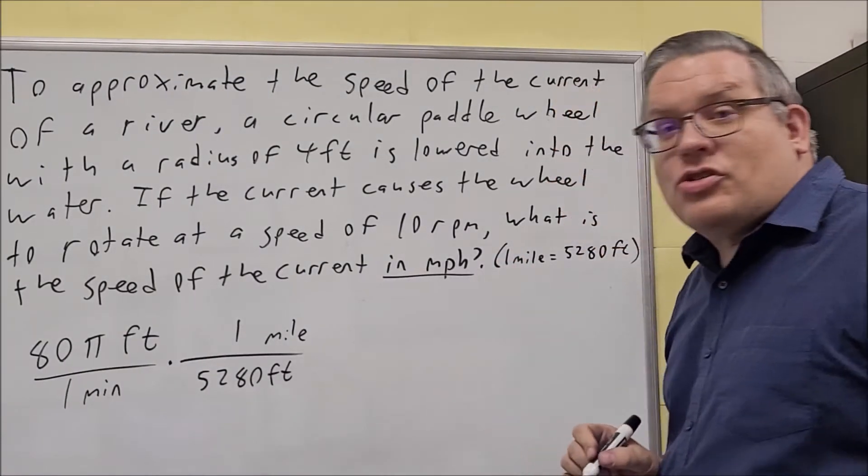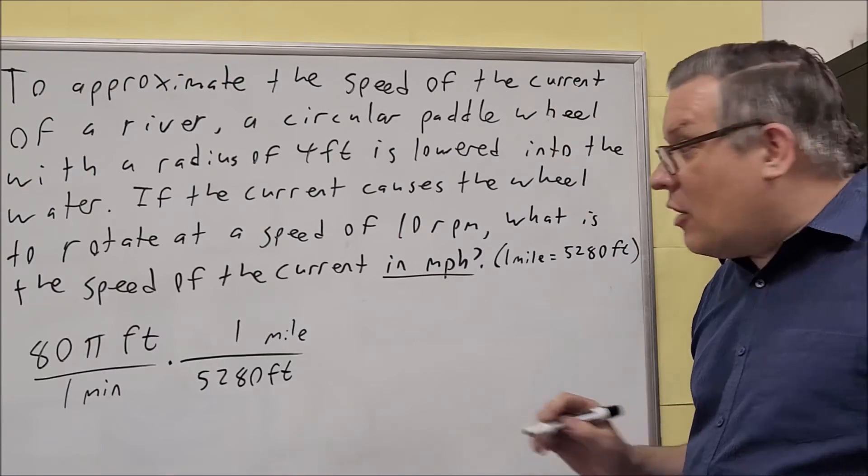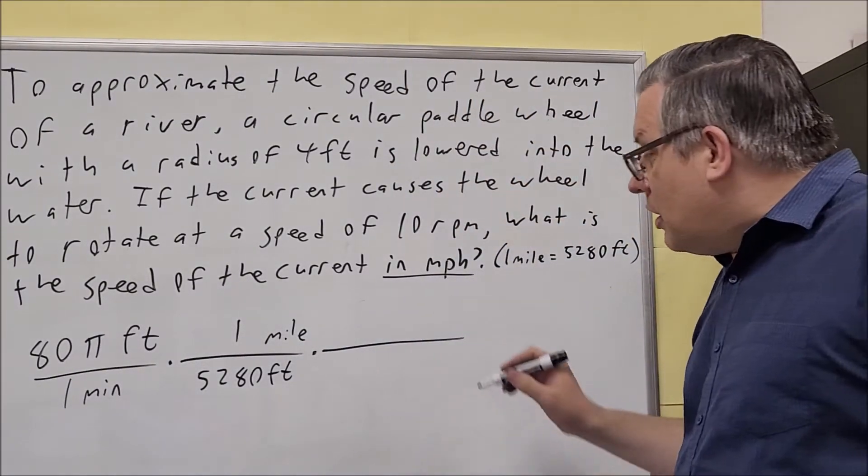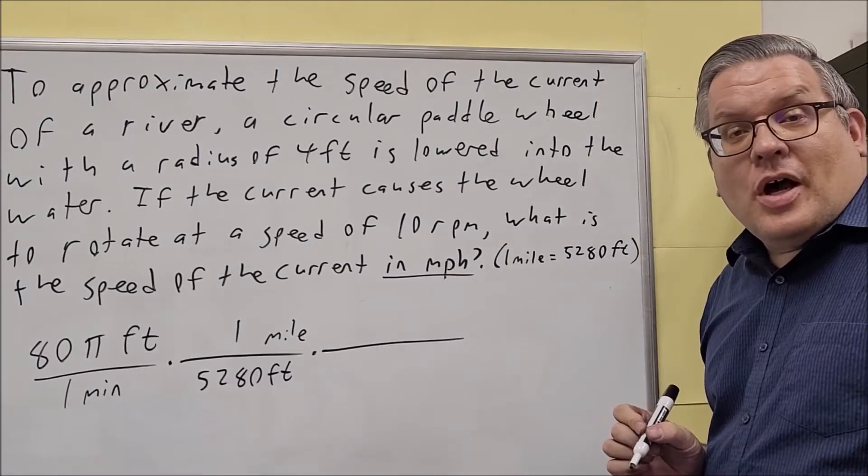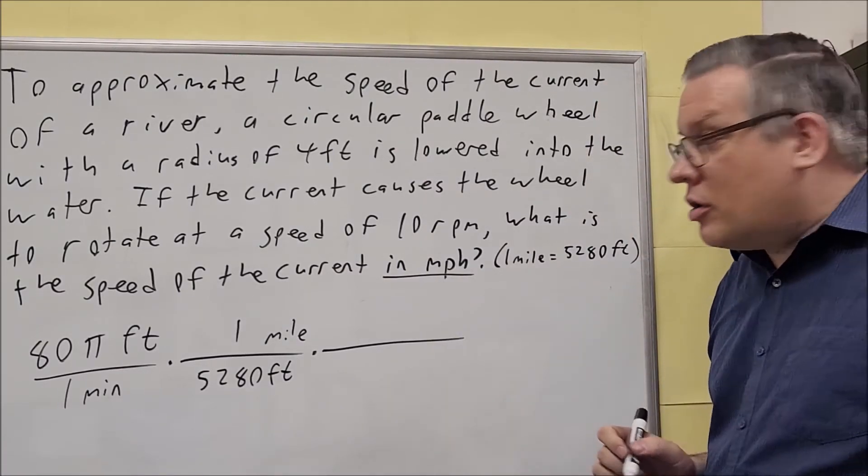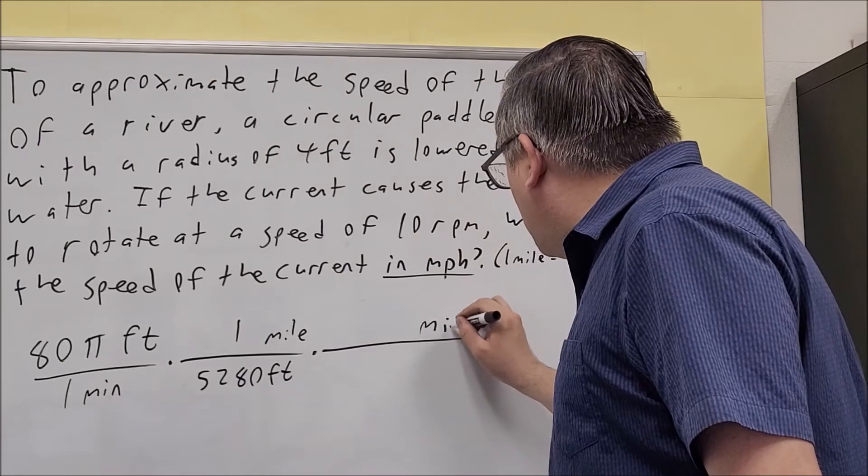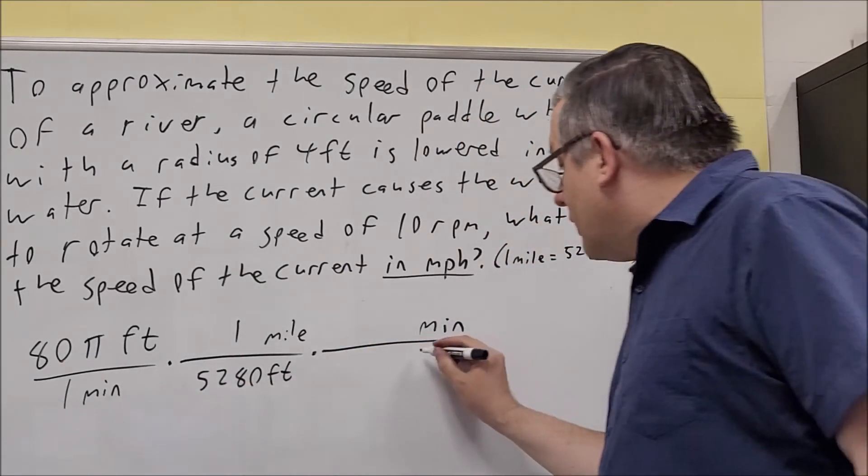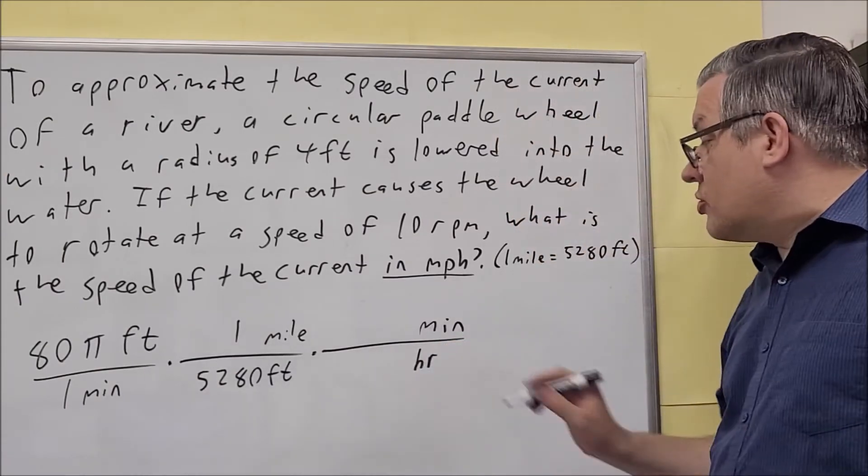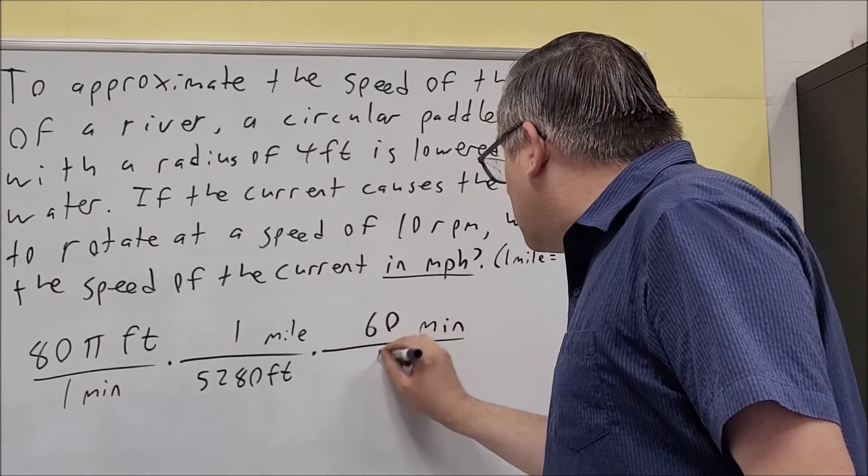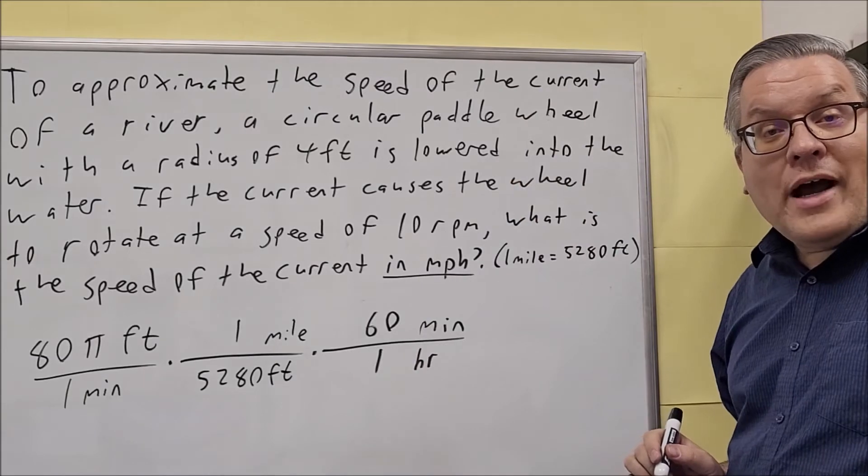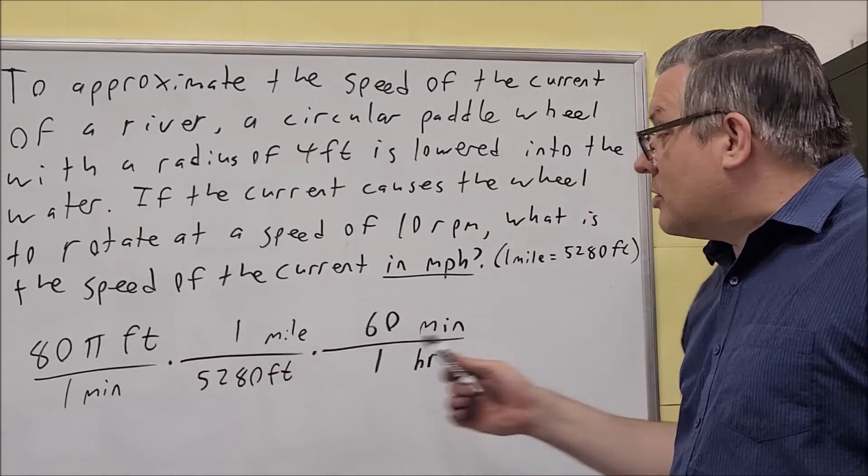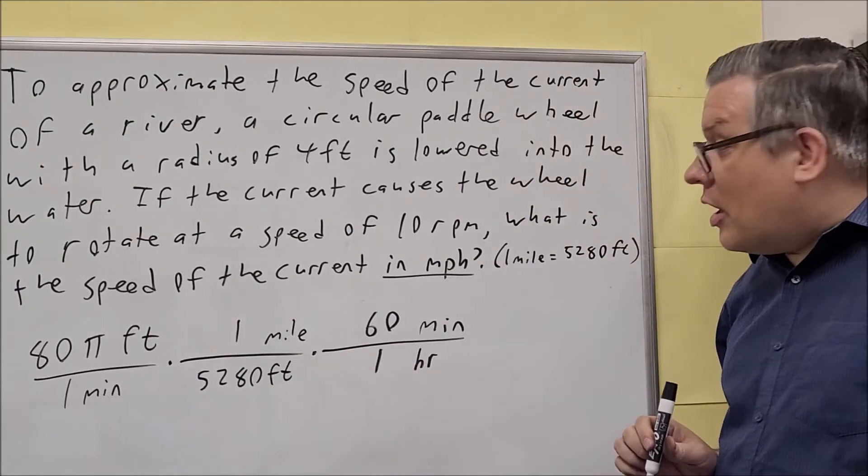So I have to do another conversion to change the minutes into hours. So let's do that next. So I know that there's 60 minutes in one hour so I want to put the minutes up here so it cancels with the minutes down below there and I'm going to put hours down below. So 60 minutes is the same thing as one hour.